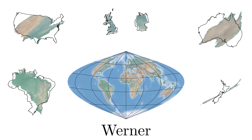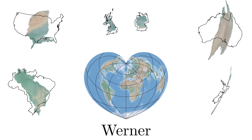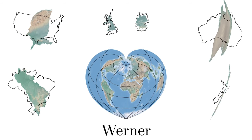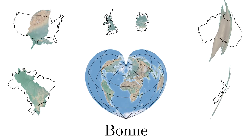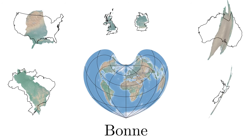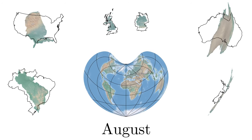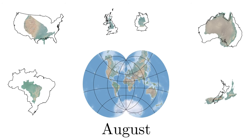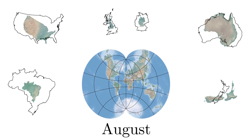Werner's projection is not in much use anymore, but can be found in certain historical documents from the 1500s. You never know when you'll need a good heart-shaped map — keep Werner in mind when wooing a cartographer.